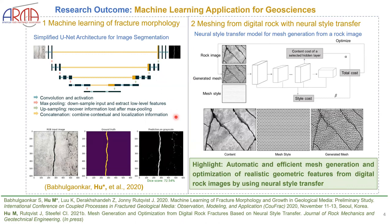My interest in machine learning has led to a recent study by my master's students using machine learning to recognize features from rock images with acceptable accuracy. We also made flexible use of machine learning — we used a neural style transfer approach to generate mesh from the rock images, and the highlight of this approach is that we can generate and optimize the mesh automatically and efficiently by considering realistic geometric features from the digital rock images.